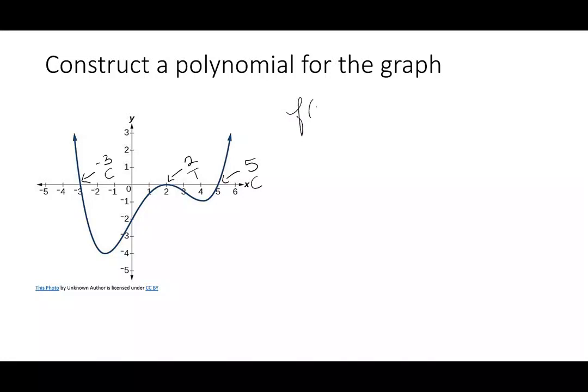So I'm starting off with f(x) equals, I have x plus 3, I'm just going to leave it as power 1, x minus 2, which I'm going to say is power 2 because it's touching, and then x minus 5 because it's crossing.